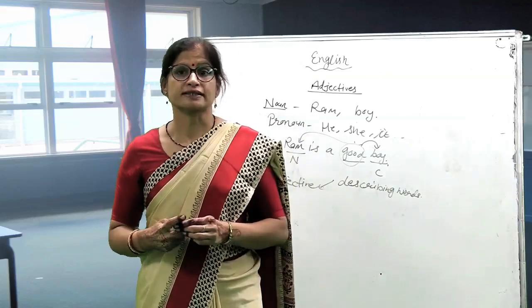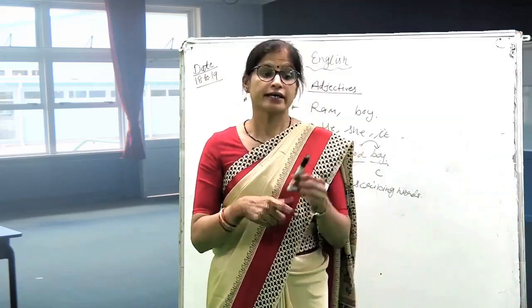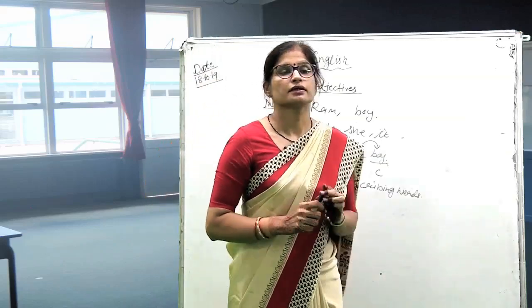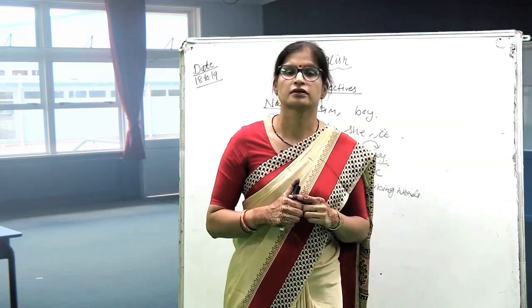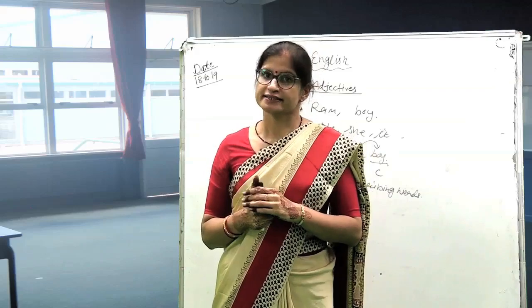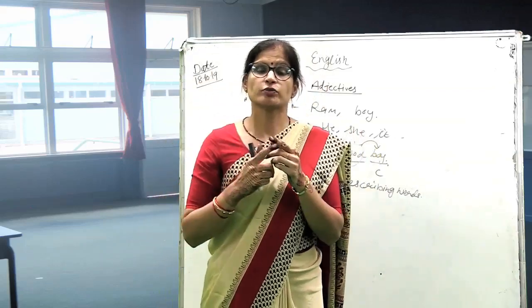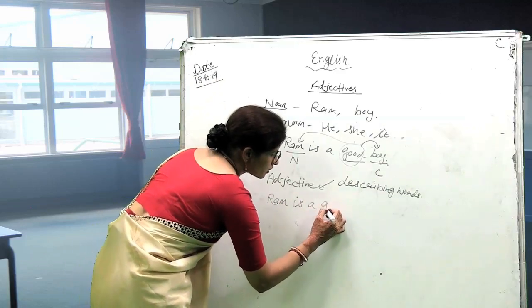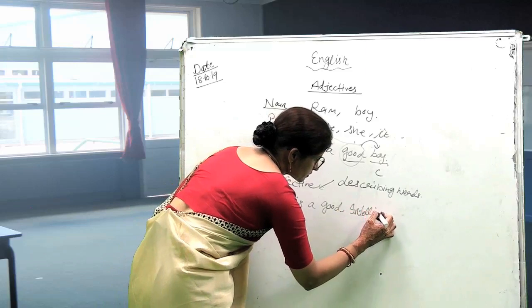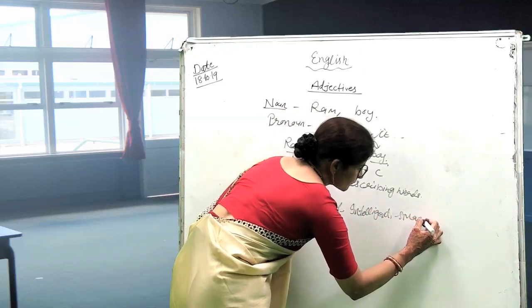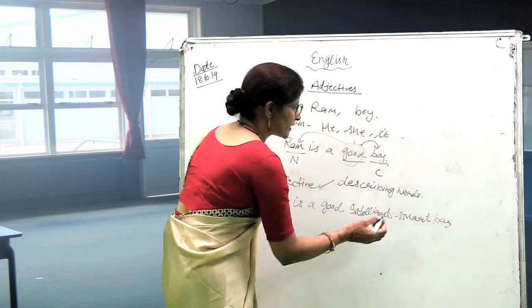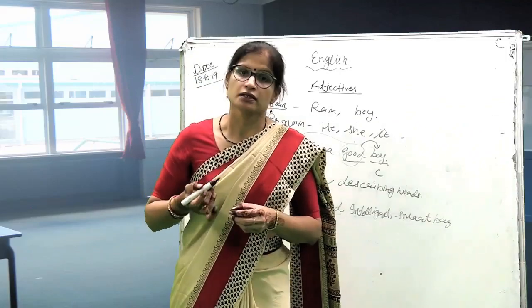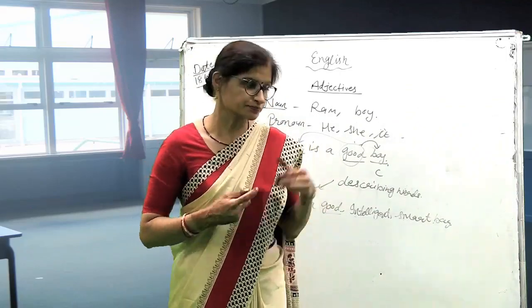I am giving you two more examples: 'This is a white pen. Its cap is black. The sun is very hot. The boy is intelligent, smart.' So all these words are called adjectives. In a sentence, there can be more than one adjective. Like, Ram is a good, intelligent, smart boy. We can use as many adjectives as we want in a sentence.